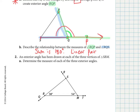An exterior angle has been drawn at each of the three vertices — we have one at the top, one on the left, and one on the right. So we have three exterior angles, one for each of the points. The original triangle is in the middle. Let's find the measure of each of the three exterior angles. We begin by finding the missing angle in the triangle using the angle sum of 180. Taking 180 minus 38 minus 54 gives us an angle of 88 degrees. Now we know all the angles in the triangle.